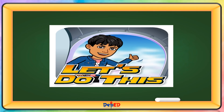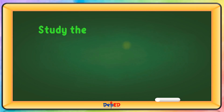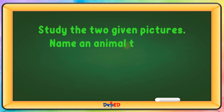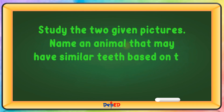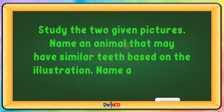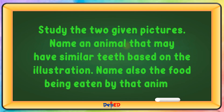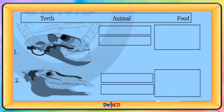Let's do this! Study the two given pictures. Name an animal that may have similar traits based on the situation. Name also the food being eaten by that animal. Tiger and lion — their food: meat of other animals. Giraffe and zebra — their food: grass or plants.